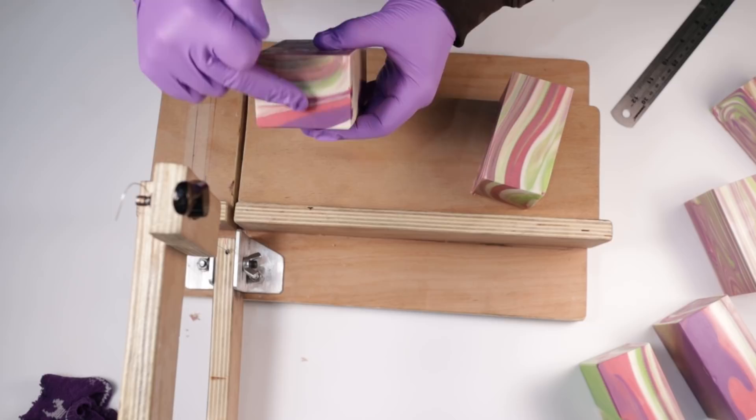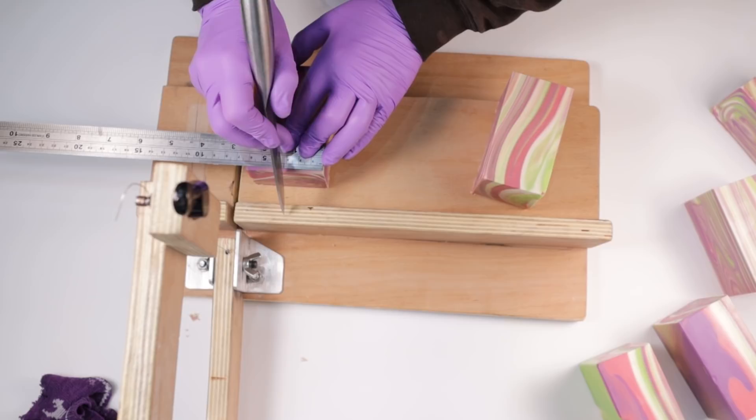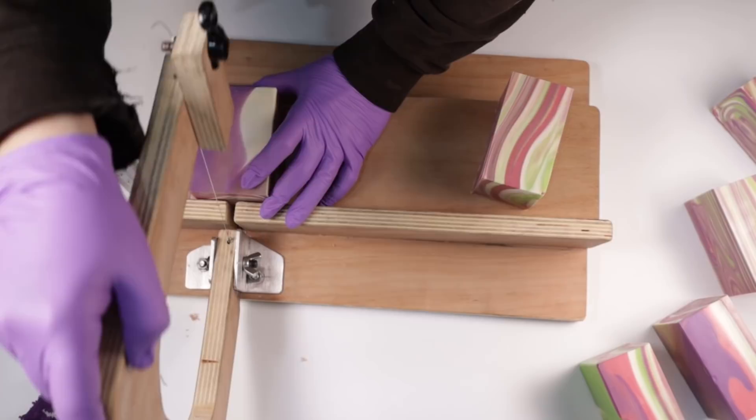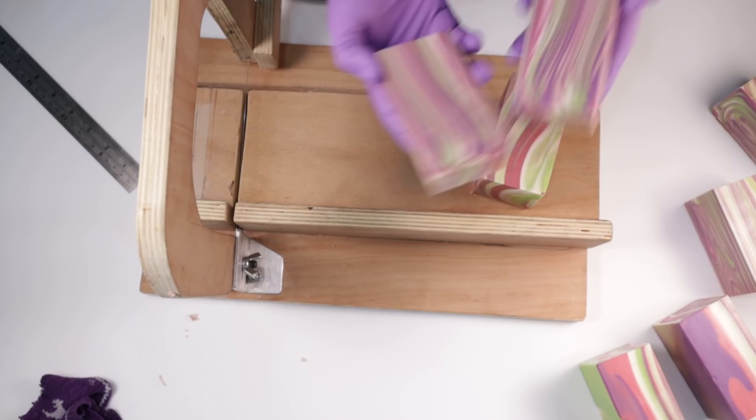And then at this point, because I want a chunkier, fatter bar rather than the standard one-inch wide, because I want my roses and everything on the top, I'm going to cut down this way rather than across to get the thinner bar. So they're all my lovely thin lines that I wanted, and I'll just repeat those for the other blocks.